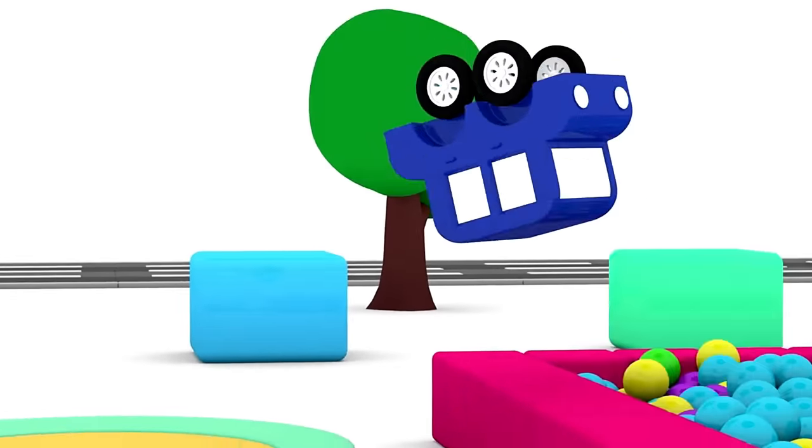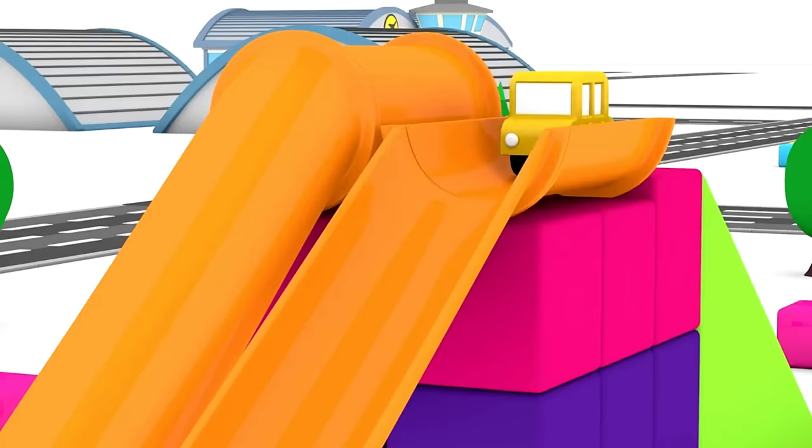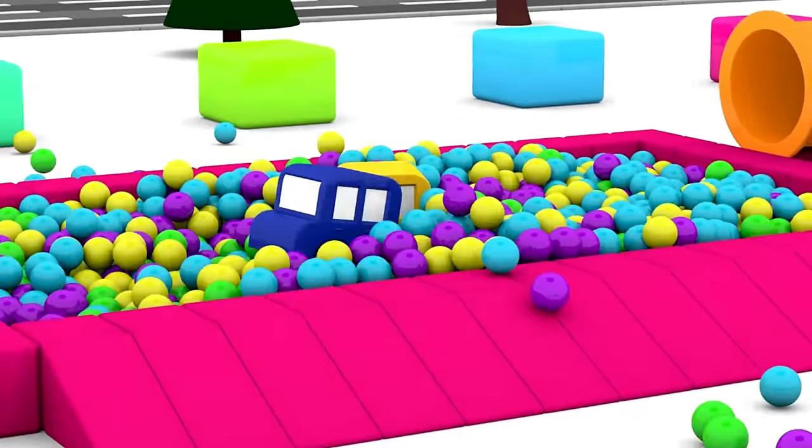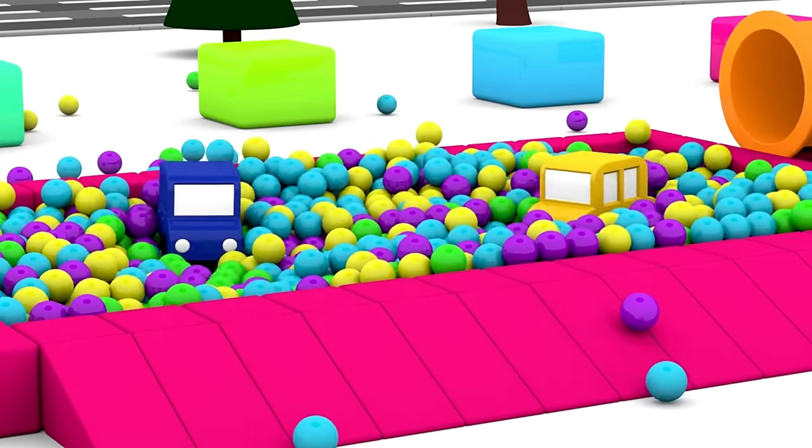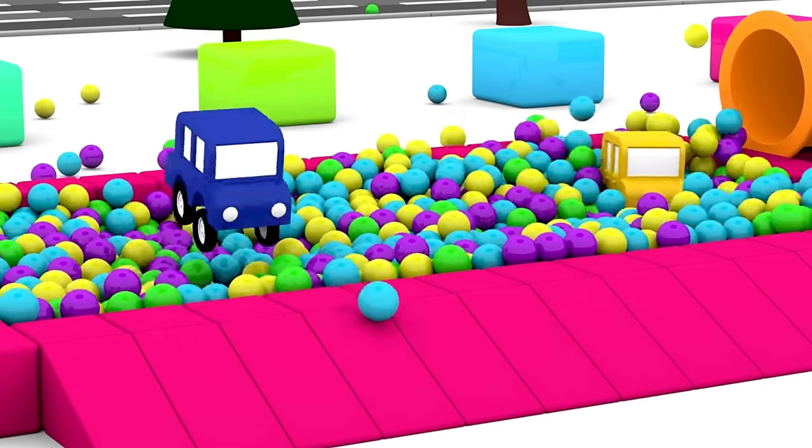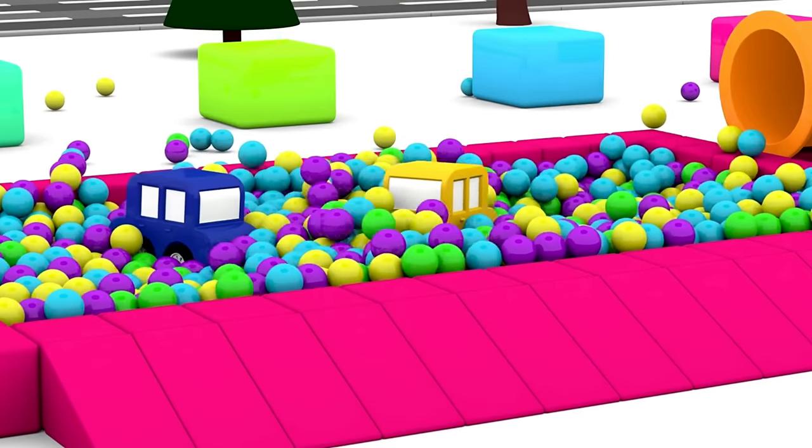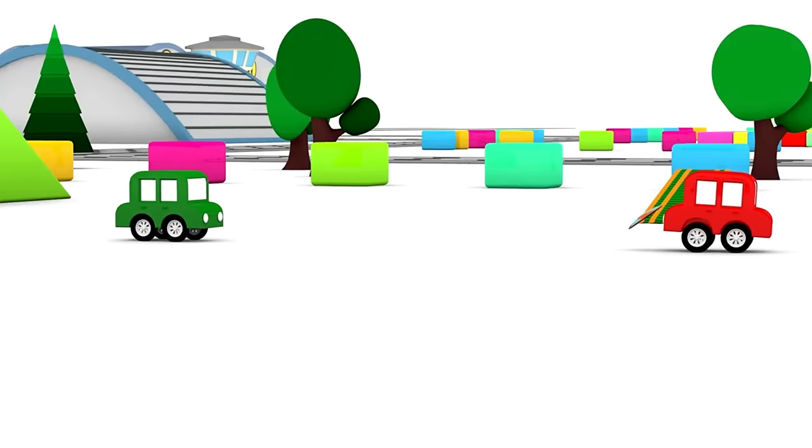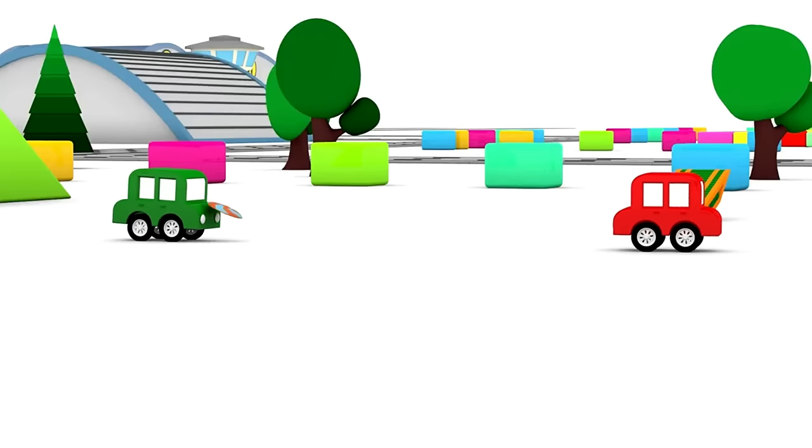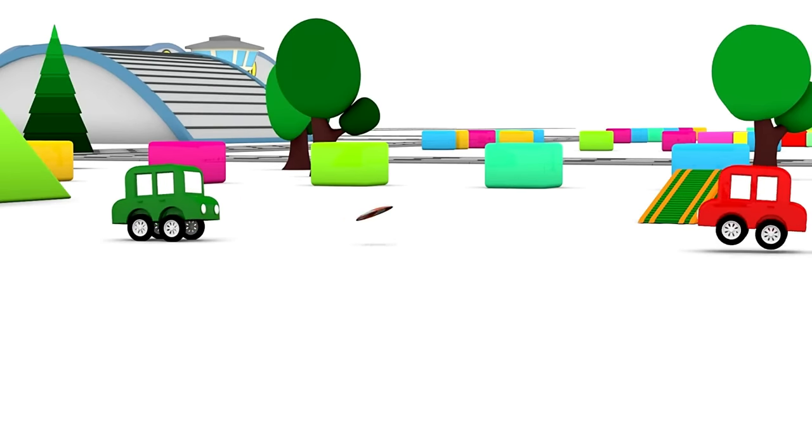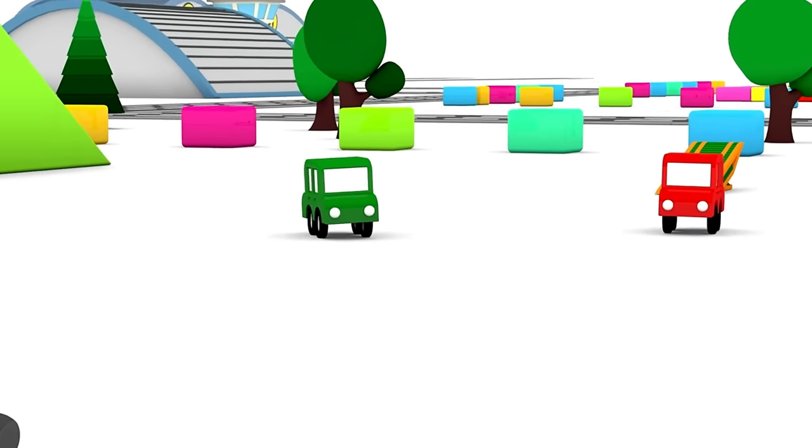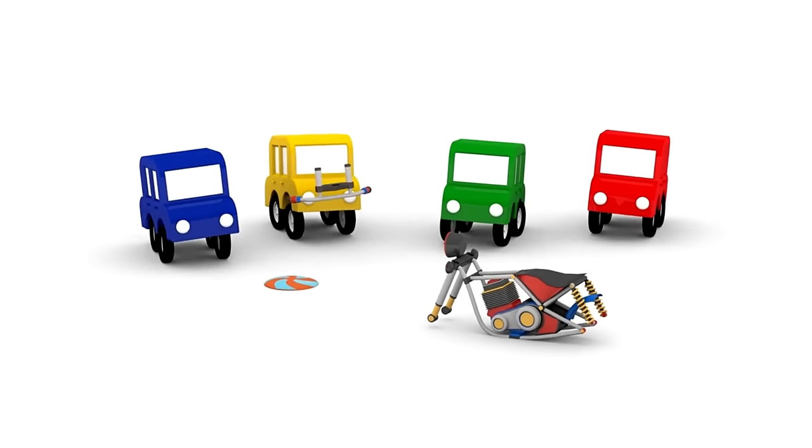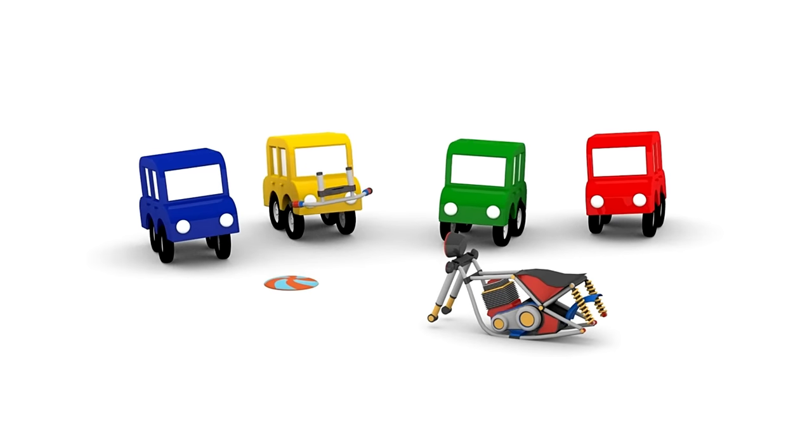The blue car is jumping on a trampoline. The little car is going down a slide. Little cars, what are you looking for in the ball pit? These are a motorcycle's handlebars. The green car and the red car are playing frisbee. Oh, wow! Here's the motorcycle's frame. Let's look for the other parts.